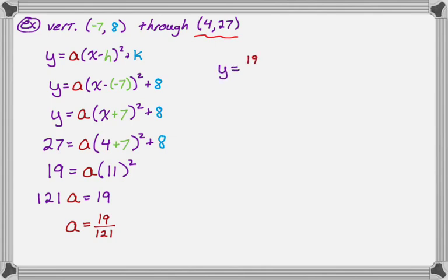So it's going to be y equals the value of a, the quantity x minus h, which became x plus 7 squared, and then plus 8.